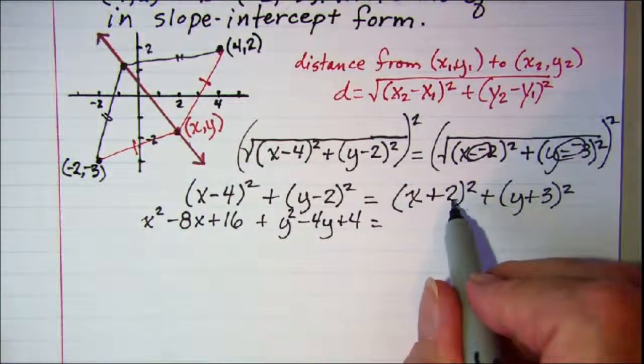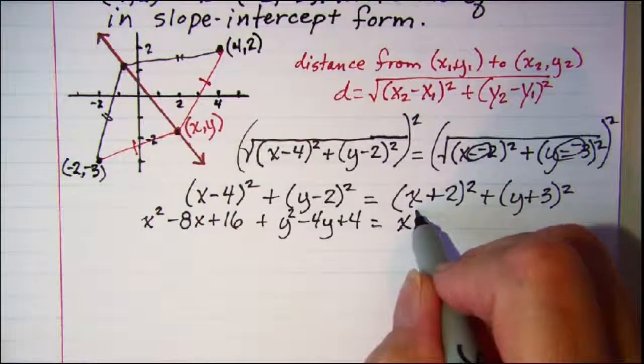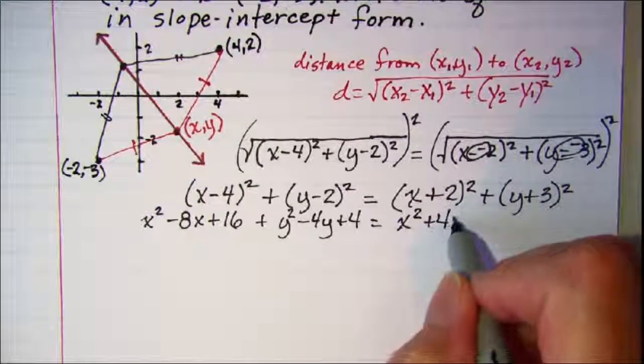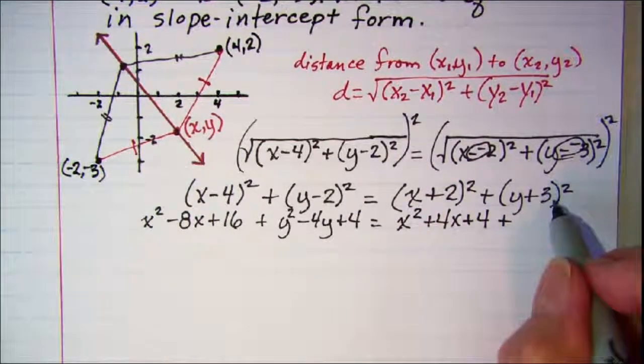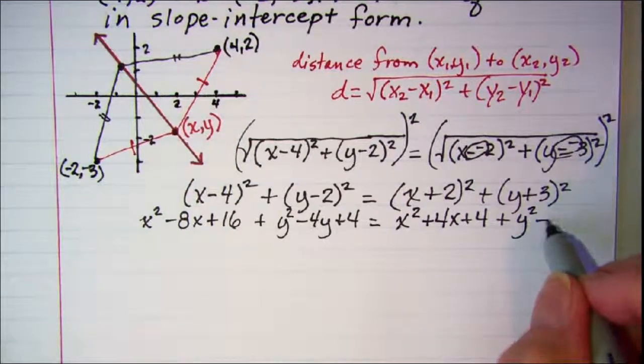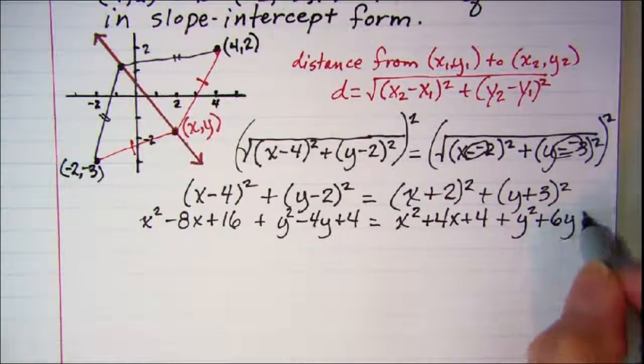This next one will be y² - 4y + 4. The first one on the right side here will be x² + 4x + 4. And then this last one squares out to be y² + 6y + 9.